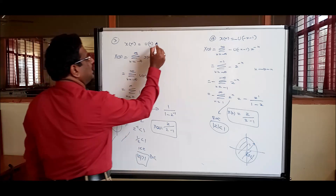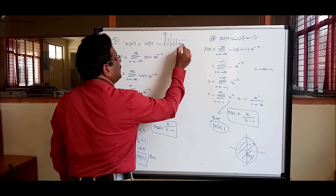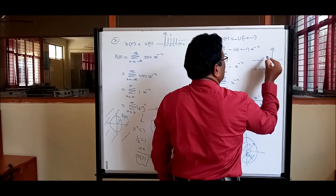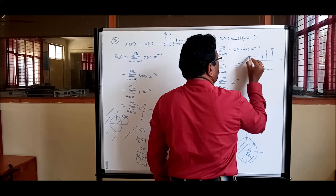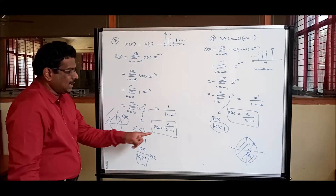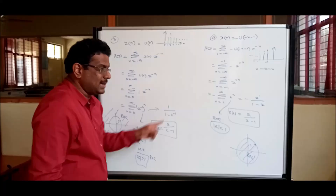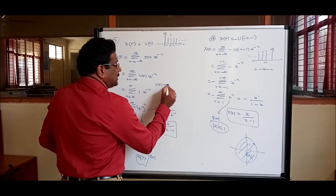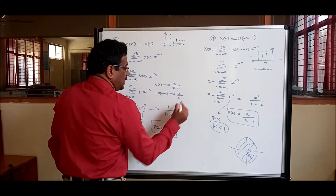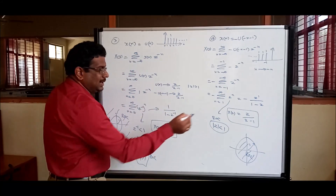Plotting the signals: u[n] has amplitude 1 from n=0 to ∞ (right-sided, causal). -u[-n-1] has amplitude 1 from n=-1 to -∞ (left-sided, non-causal). Both give X(z) = z/(z-1), but their ROCs differ. For u[n]: ROC is |z| > 1 (outside). For -u[-n-1]: ROC is |z| < 1 (inside).